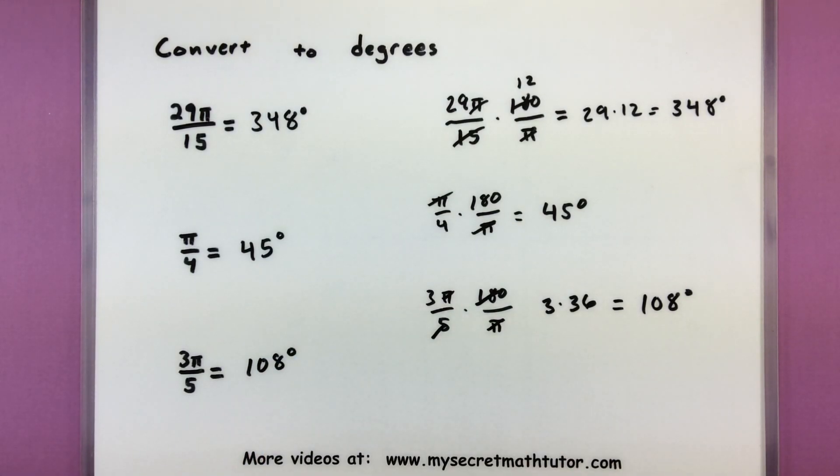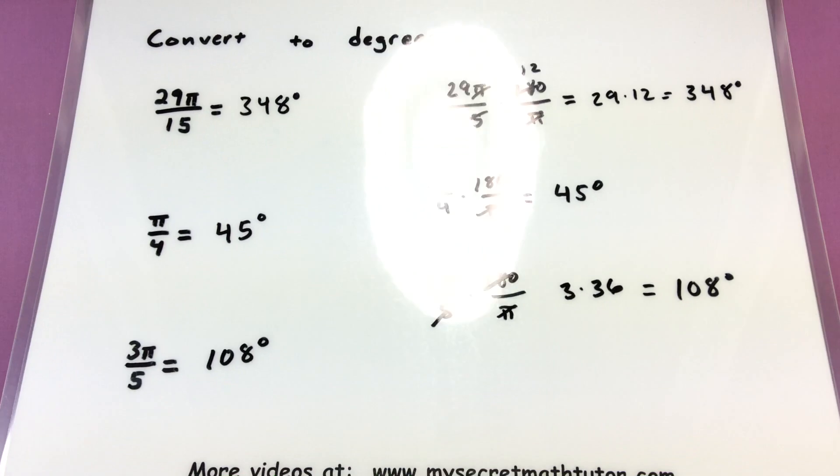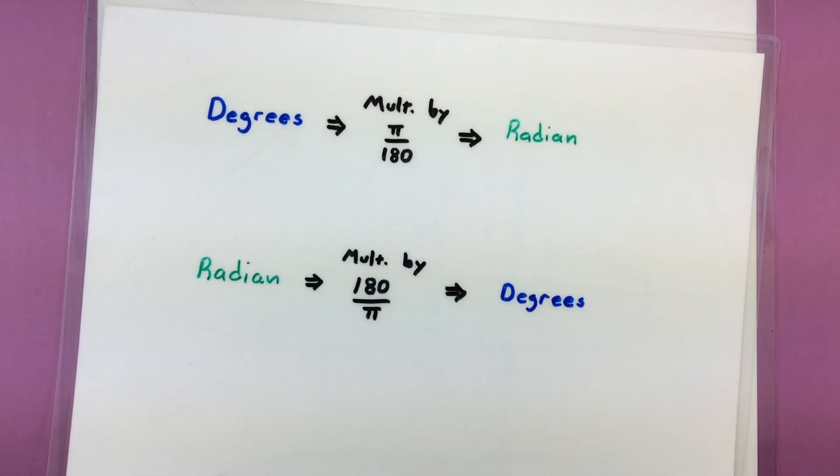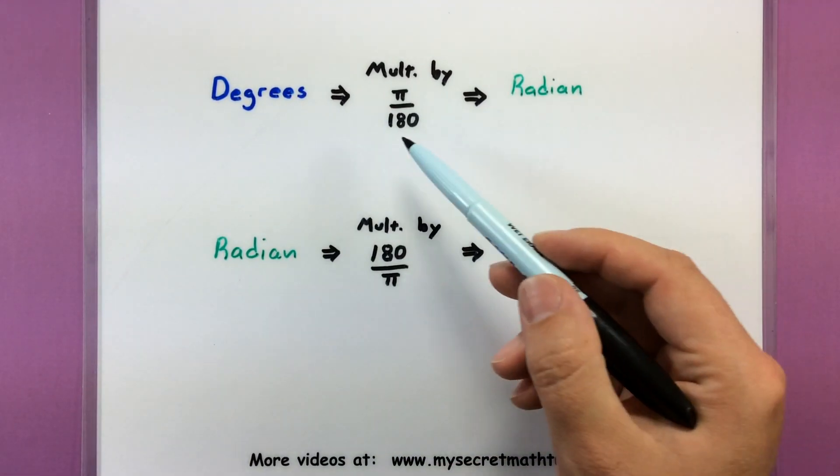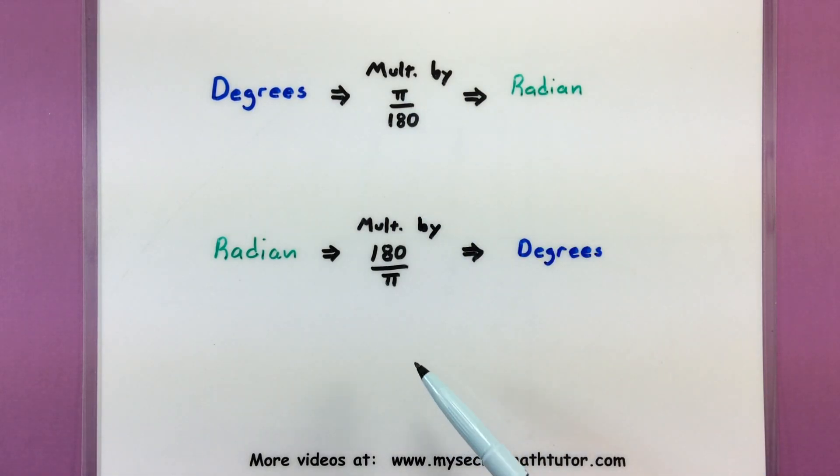Not bad. So again, the key is remembering what should you multiply it by in order to convert it to the proper radians or to degrees. And it's all about multiplying by pi divided by 180, or 180 over pi. If you'd like to see some more videos, please visit MySecretMathTutor.com. I'll see you next time.